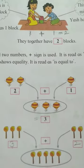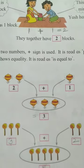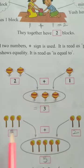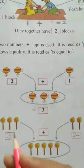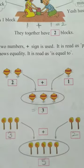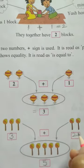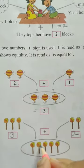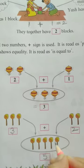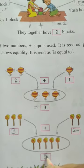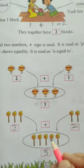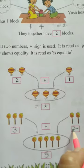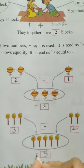Now let us take another example. There are one, two, three — three lollipops. And there are one, two — two lollipops. They together have one, two, three, four, five — five lollipops. Three plus two is equal to five.